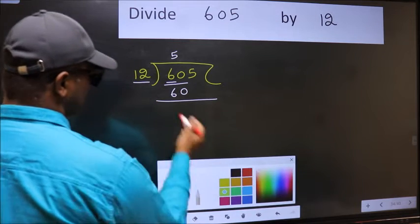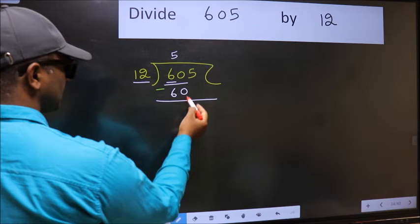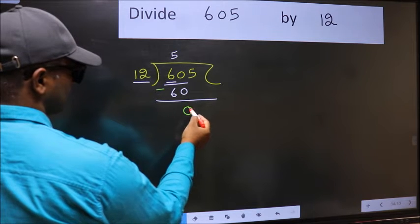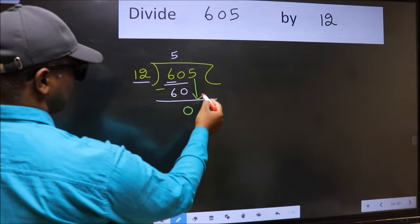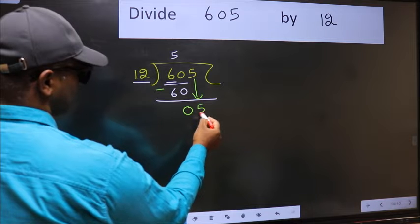Now you should subtract. 60 minus 60, 0. After this, bring down the beside number. So 5 down.